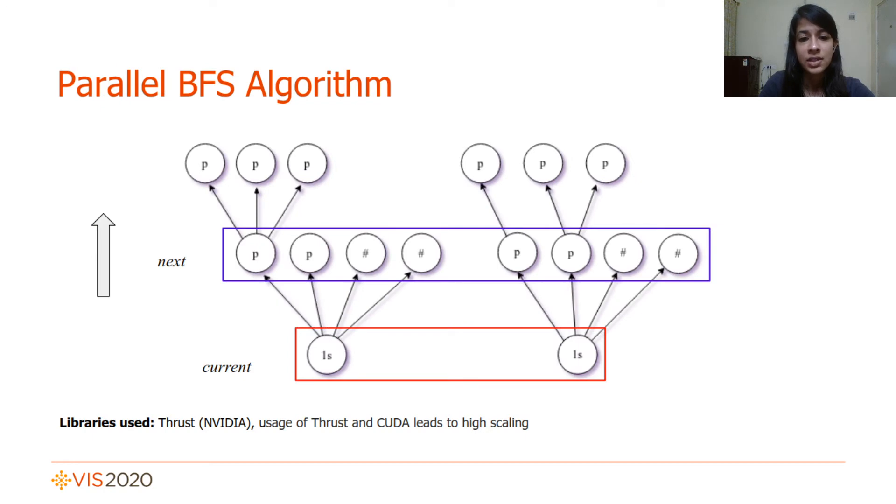The first task is to mark reachable paths between 1-saddle pairs by conducting a BFS traversal. Our parallel BFS algorithm iteratively computes and stores a frontier of nodes that are reachable from all source nodes, which in this case are the set of 1-saddles. During a given iteration, the current frontier discovers the next frontier and each discovered pair is represented by P in the graph shown, with invalid pairs denoted by hashes.